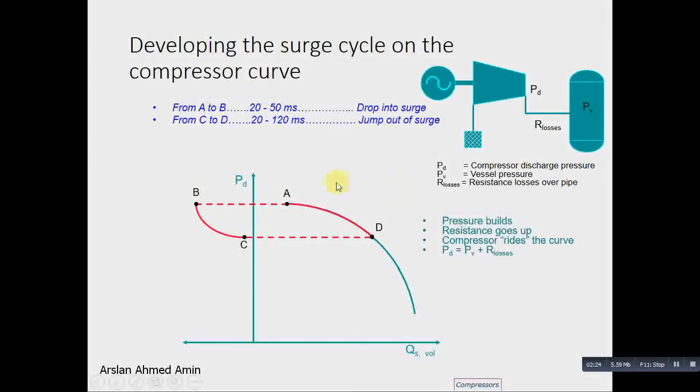Here are the typical timings. From point A to B, it is 20 to 50 milliseconds. The jump out of surge from A, B, C, D, A is 0.3 to 3 seconds. So this is the surge cycle time.